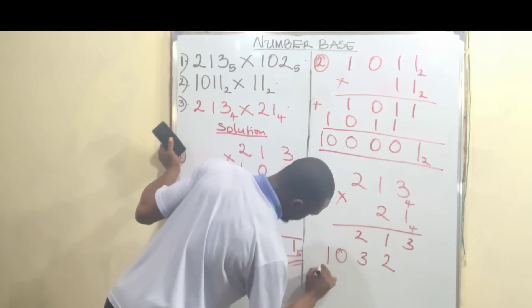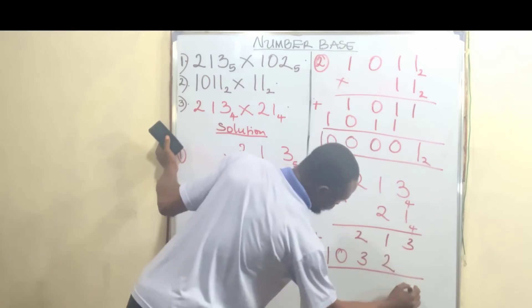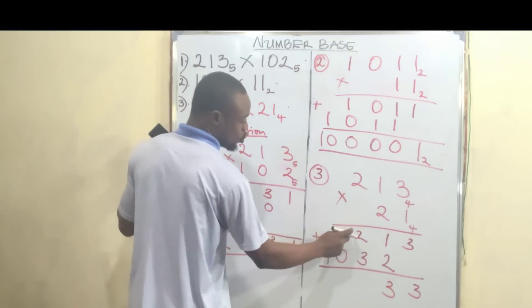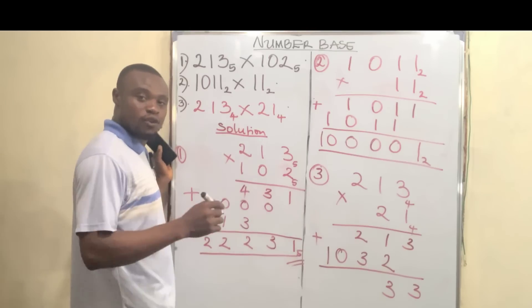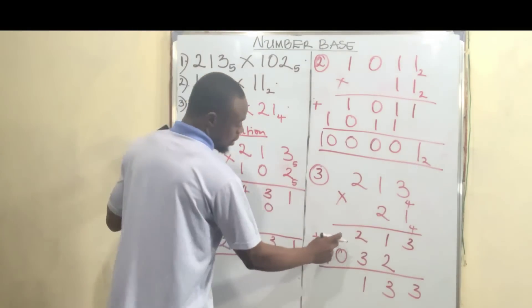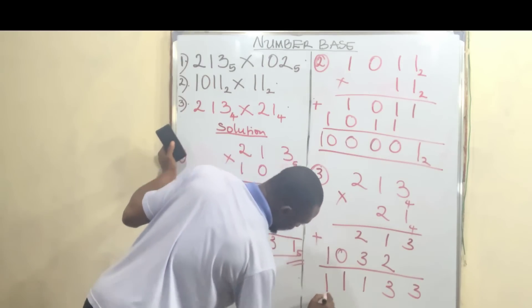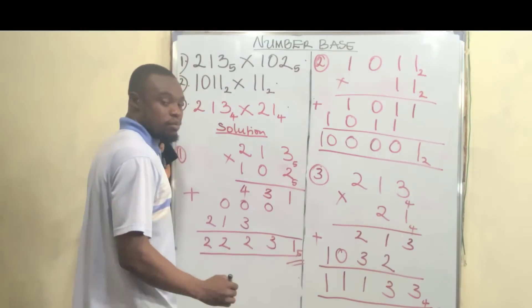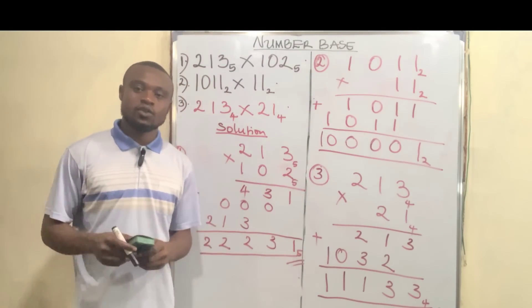We have 1 and 0 from that carry. Rule a line and put a plus. Bring down the 3. 1 plus 2 is 3. Now 2 plus 3 is 5; 5 in base 4 is 1 remainder 1, so write 1 and carry 1. There's a 0 here plus that carried 1 — bring down 1. And that is our final answer in base 4. Thank you, and see you in the next video.